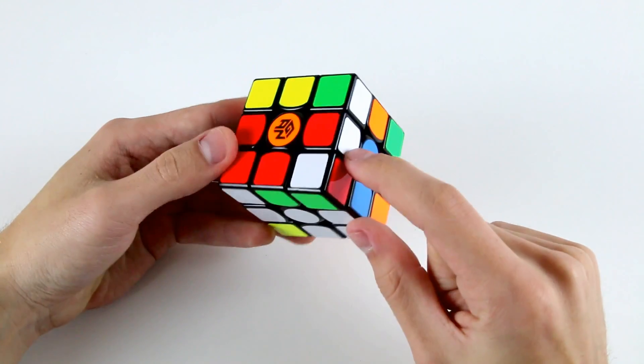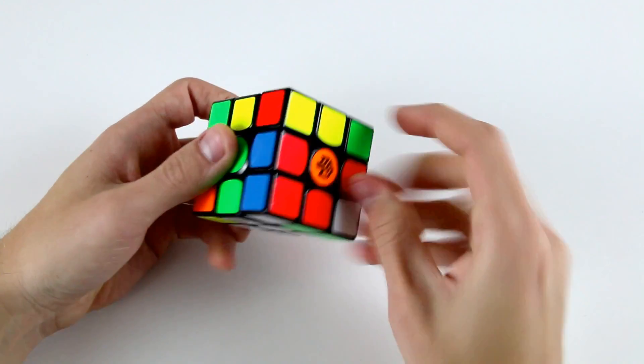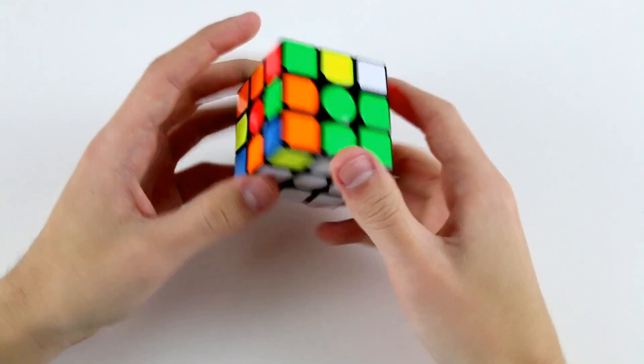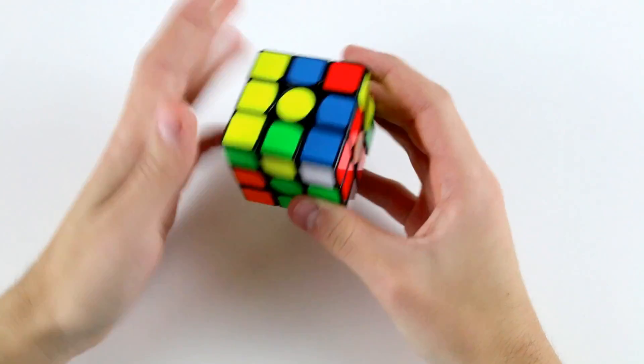But let's say if we have this case where if we incorrectly solve this one, it brings out this pair into the top, then it may make sense to actually just do the one move incorrect cross. So solve these two but these two are incorrect and get this F2L pair.